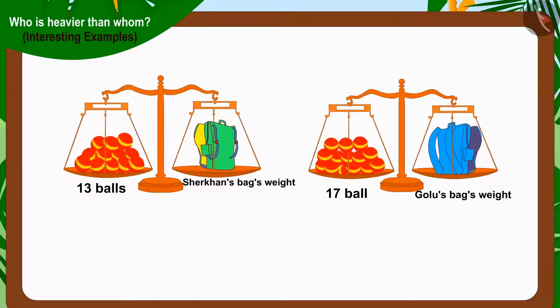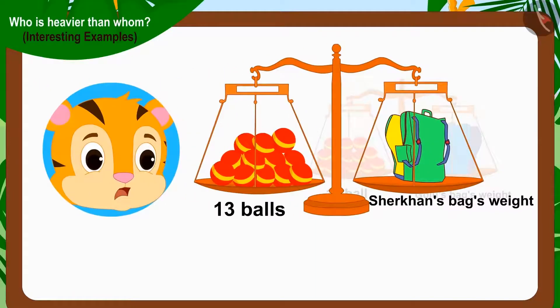And whose bag is the lightest? Exactly! Sher Khan's bag is the lightest because the number of balls equal to the weight of his bag is thirteen, which is the smallest number.